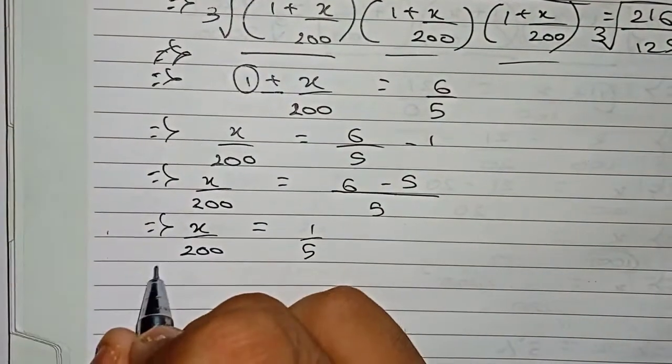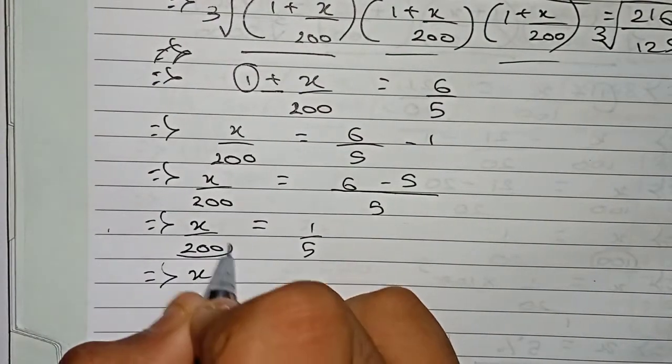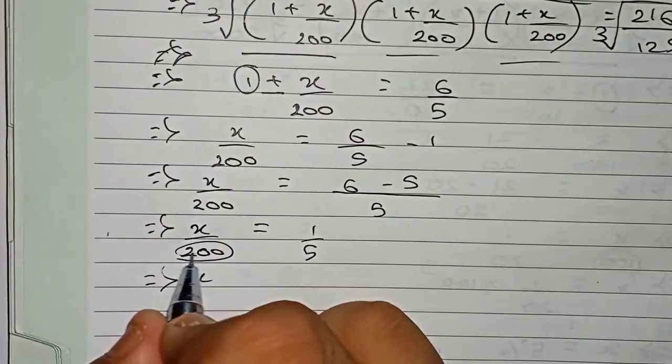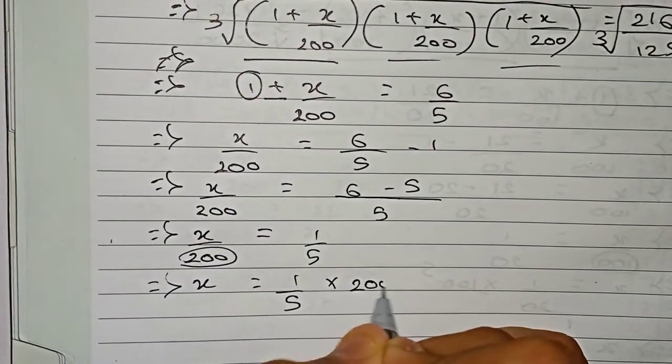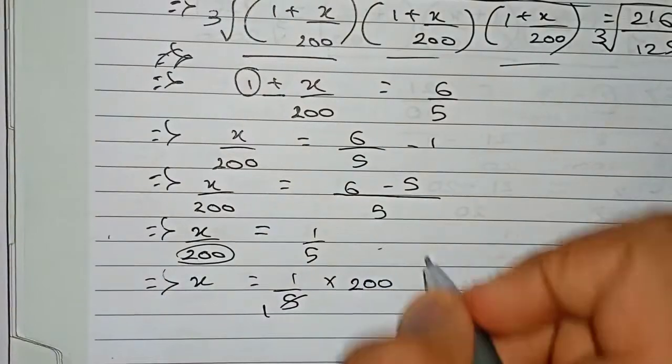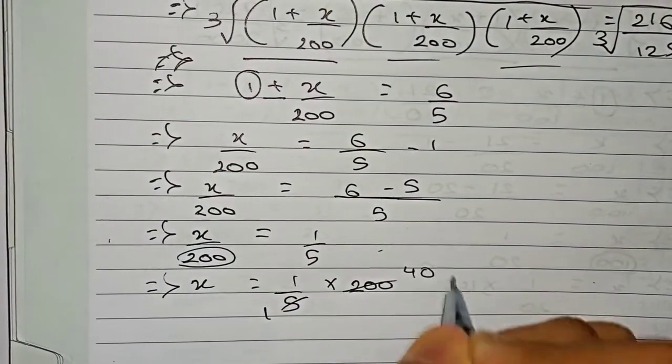Now x will be equal to, we are taking this 200 to this side. As it is in division, it will go for multiplication. 1 by 5 into 200, if we cut it, it will become 40.